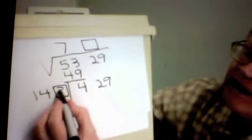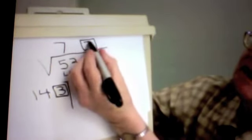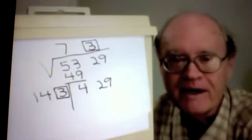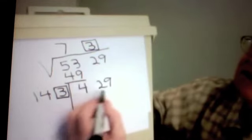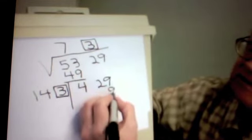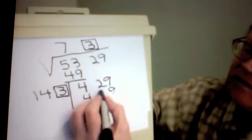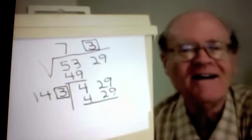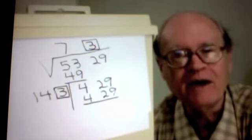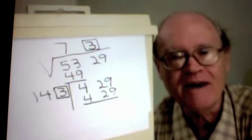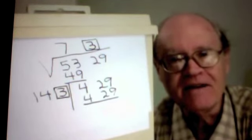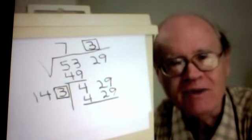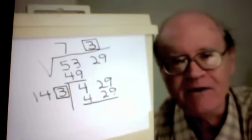143 times 3 is 429. And there you have it. The square root of 5329 is 73. And we can easily verify that 73 times 73 actually does equal 5329.